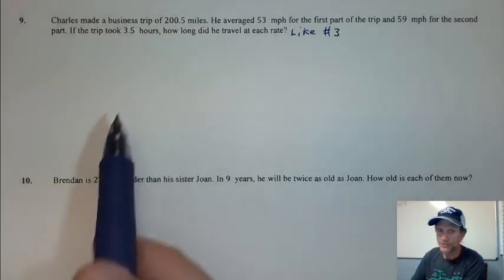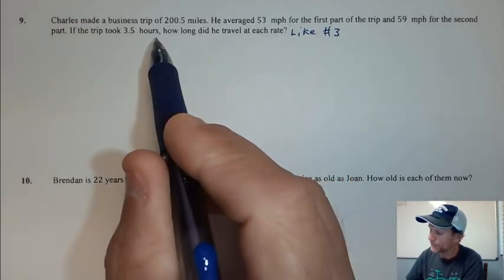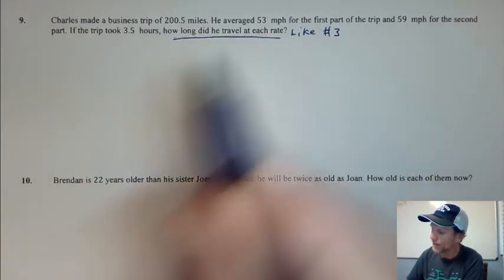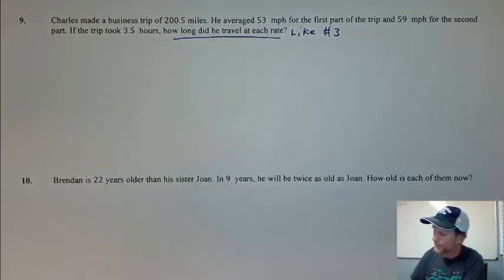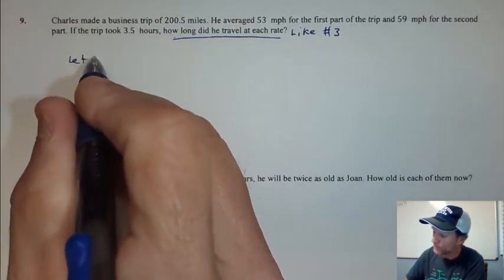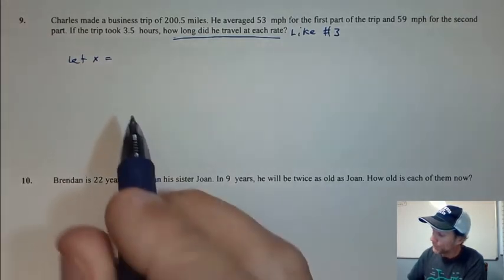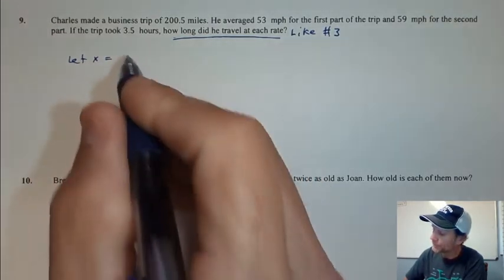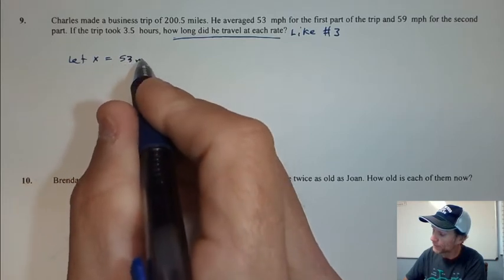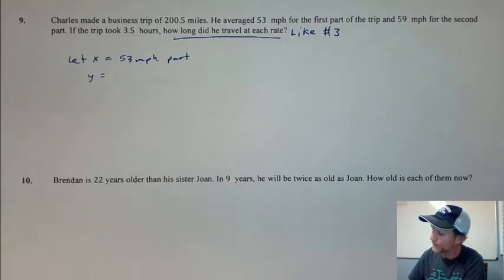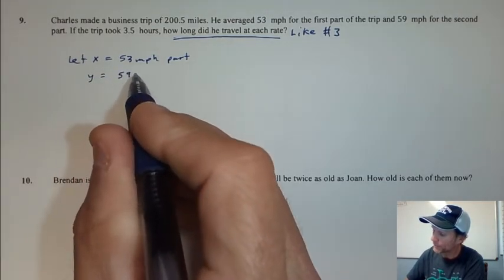As I read through this, I see that I'm looking for how long did Charles travel at both rates. So I'm going to let x equal the first part, or the 53 mile per hour part.